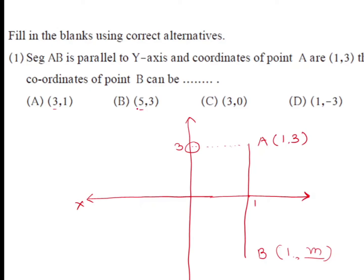At option B the x-coordinate is 5, so that is also not the coordinates of point B. At option C the x-coordinate is 3, also not valid. At option D we have x-coordinate 1 and y-coordinate −3. The y-coordinate may be any number, but the x-coordinate must be 1. Since segment AB is parallel to the y-axis, both points must share the same x-coordinate. So option D, coordinates (1, −3), is the correct alternative.